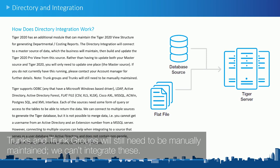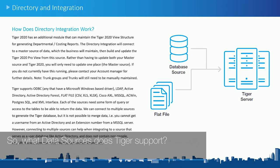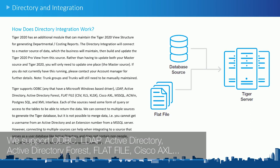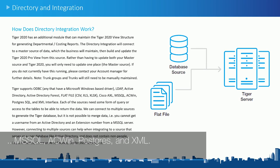Trunks and trunk groups will still need to be manually maintained — we can't integrate these. So what data sources does Tiger support? We support ODBC, LDAP, Active Directory, Active Directory Forest, Flatfile, Cisco Excel, MSSQL, ACWIN, Postgres, and XML.